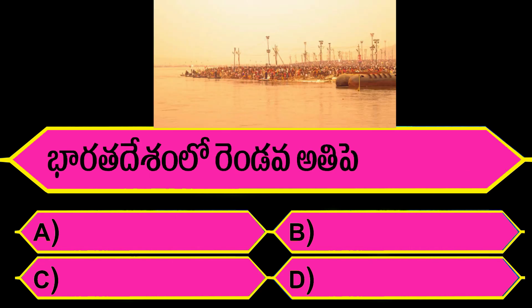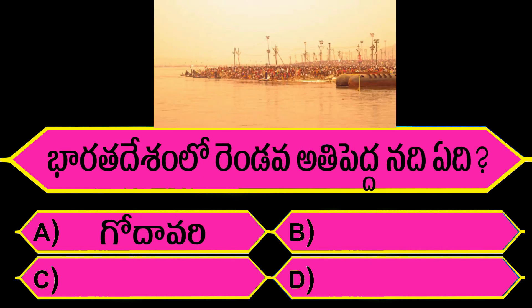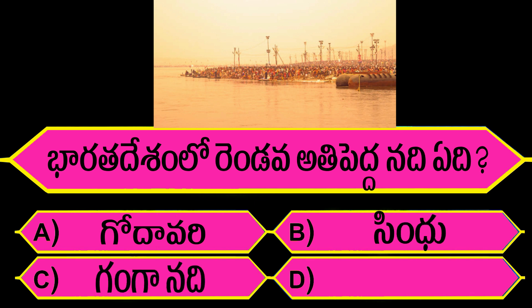Bhartadeseam lo rindu wa atipyadda nadhi edhi. Option A: Godavari. Option B: Sindhu. Option C: Ganga nadhi. Option D: Brahmaputra nadhi.